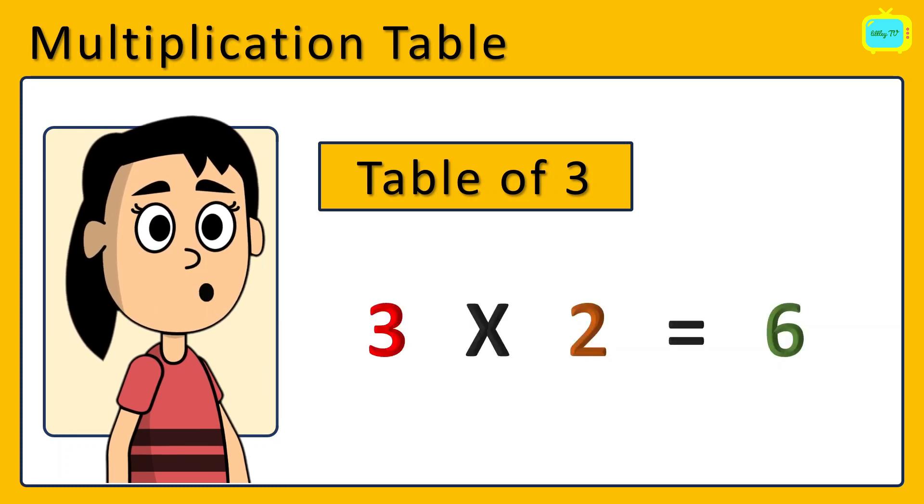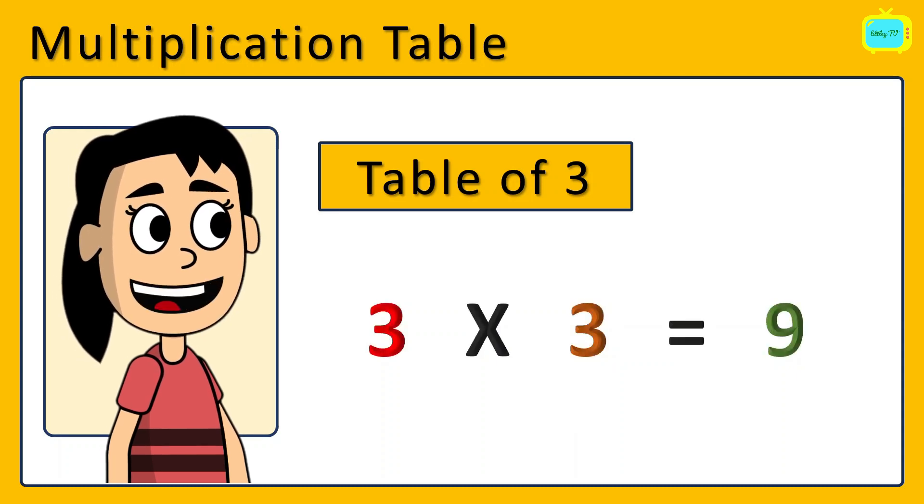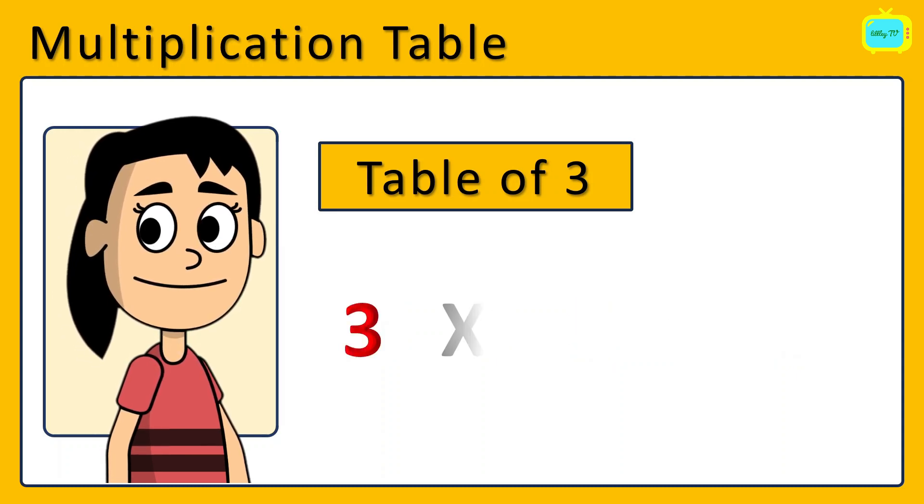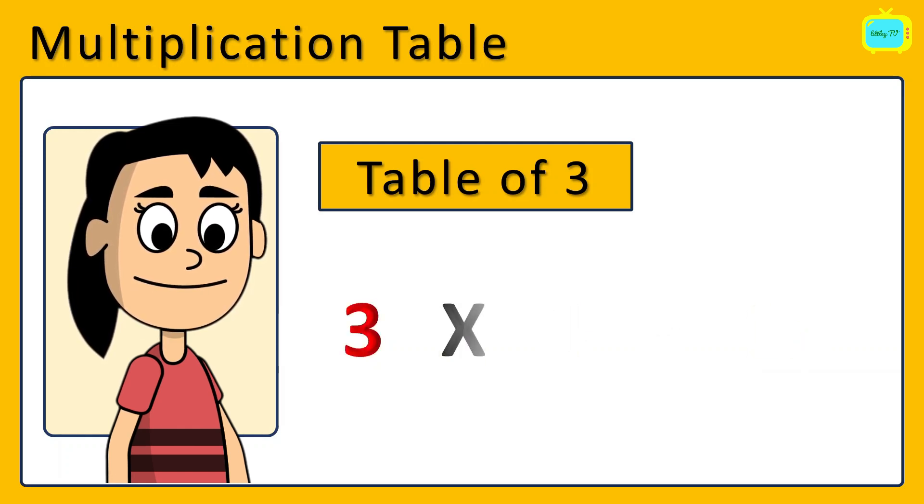3 times 2 is 6. 3 times 3 is 9. 3 times 4 is 12. 3 times 5 is 15.